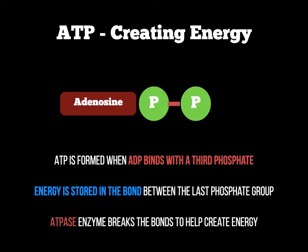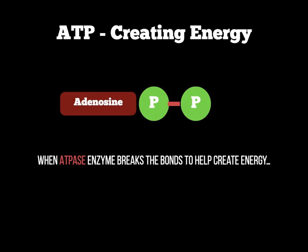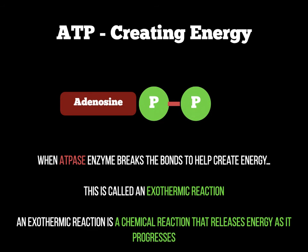As ATPase smashes off that bond, we've lost that phosphate, so the compound now becomes ADP again because there are only two phosphates. When we release that phosphate from the ATP compound, we call that an exothermic reaction. The way to remember that is EX for exiting — we're releasing the phosphate. The definition of an exothermic reaction for your exams: a chemical reaction that releases energy as it progresses. So we've released that phosphate, broken that bond, and energy is released and used by the body.